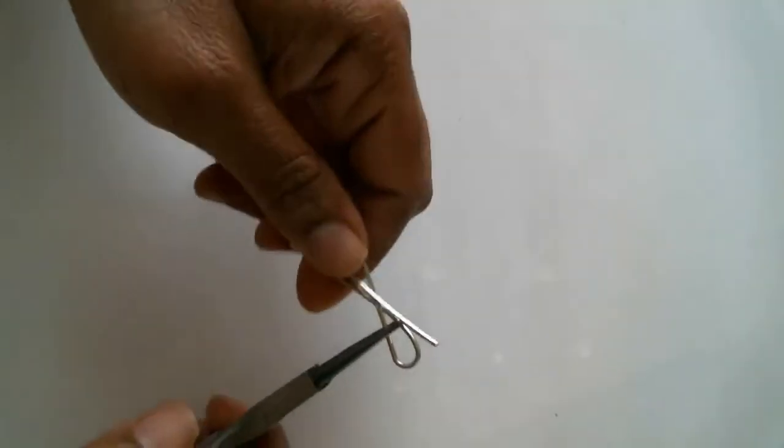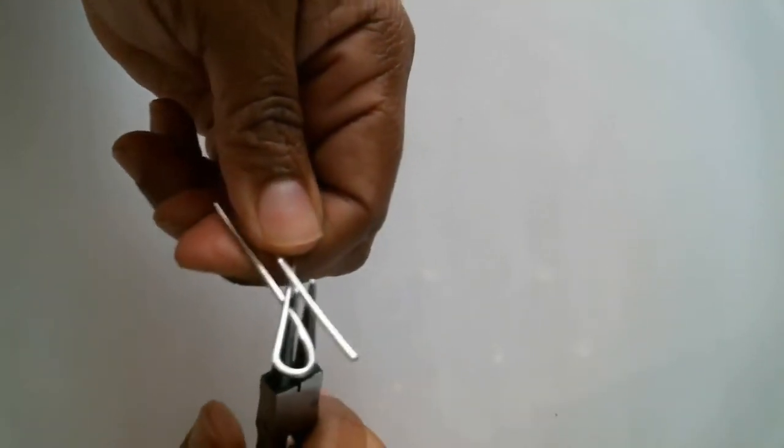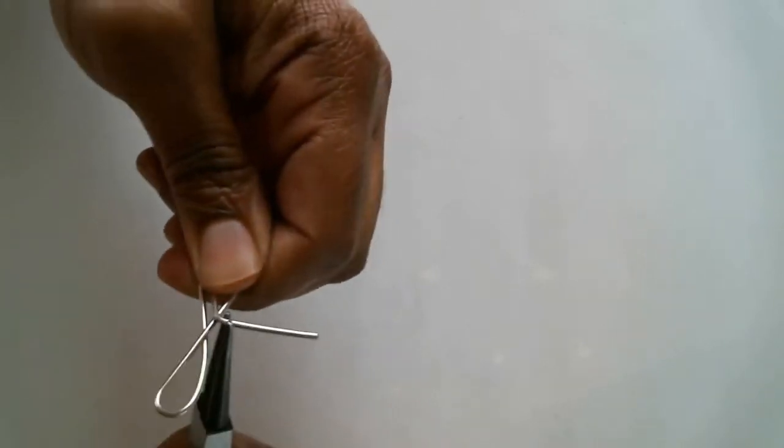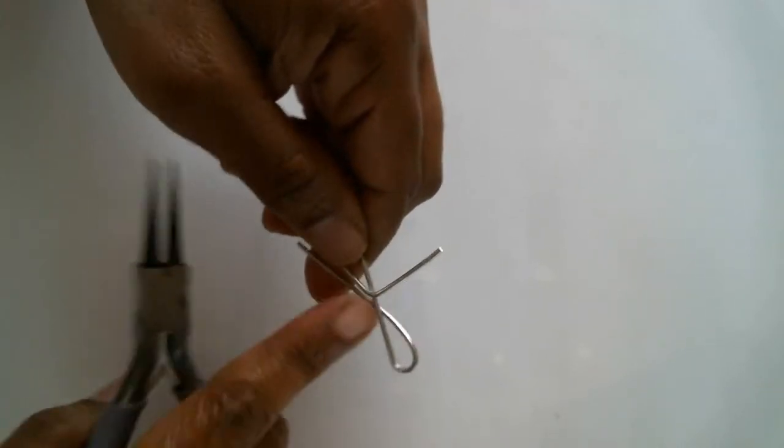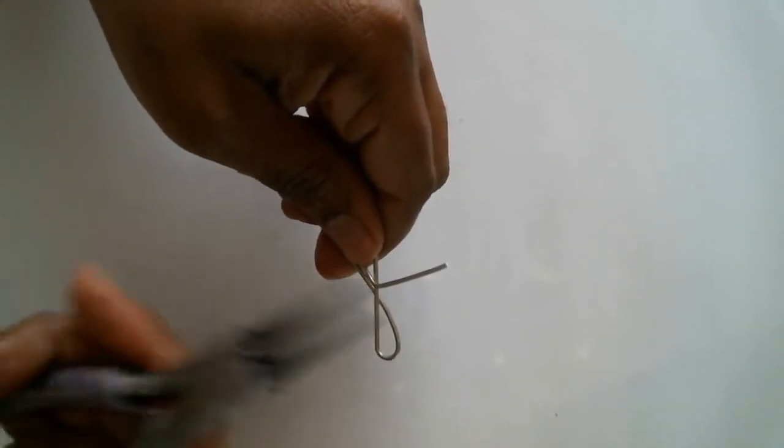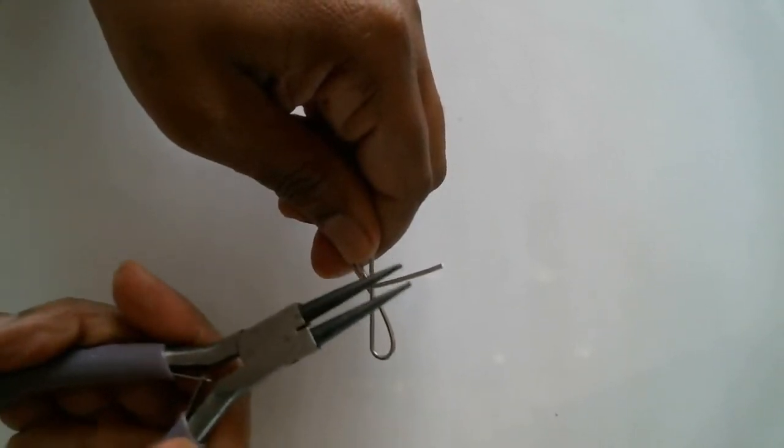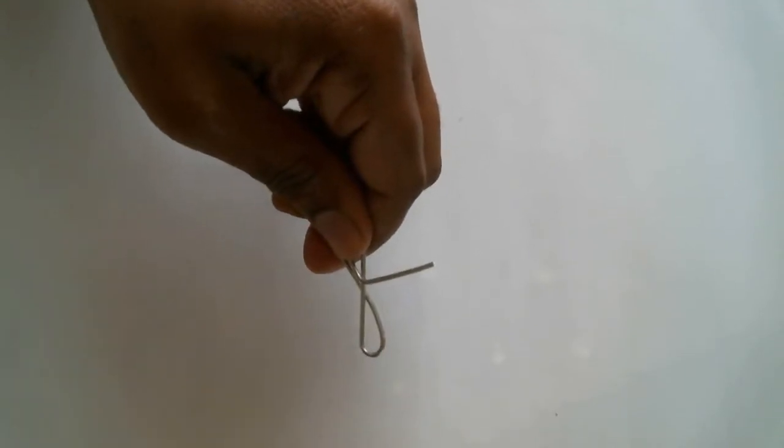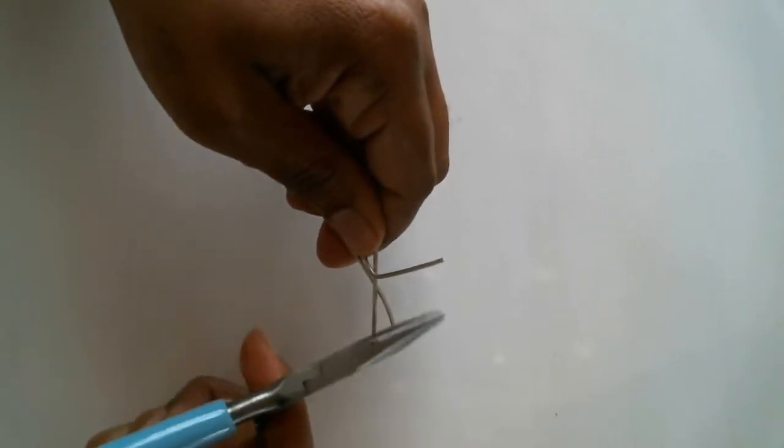Awesome. So, now I'm going to bend this tail here at an angle because now I'm ready to wrap. I'm going to continue to hold this, but I no longer need this to make loops. So, I'm going to trade out and bring in my flat nose pliers. Now,